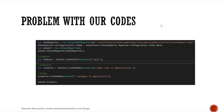Problem with our existing code. In our last video we were trying to create an Extent Report, which was cool, but all the variables — the HTML reporter, the Extent Reports, the features, scenarios, and steps — were all sitting under one single step, which is completely not relevant. As you can see, the scenario was hardcoded, the feature was hardcoded, and the step itself was hardcoded. So that's not really going to be helpful for a real-time situation.